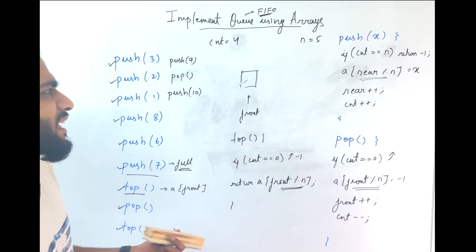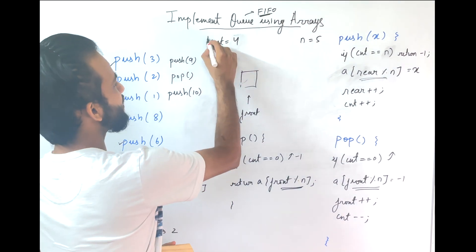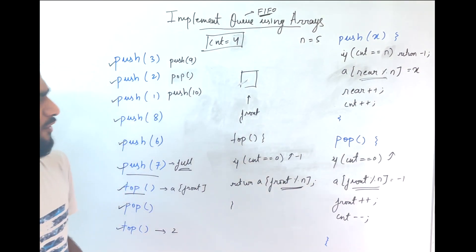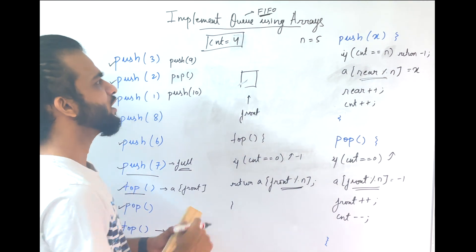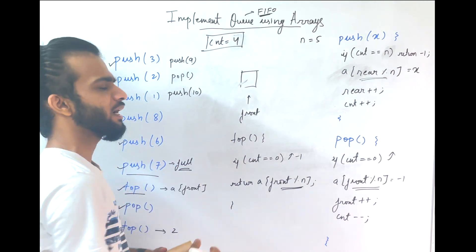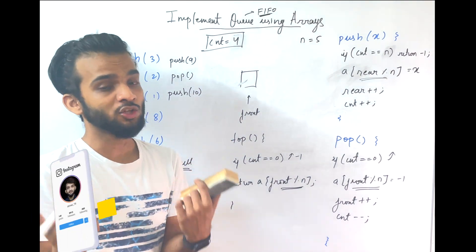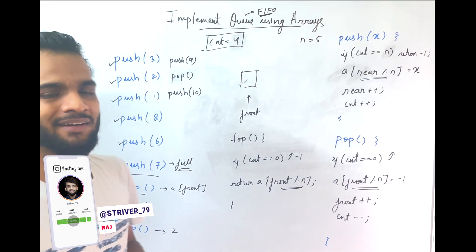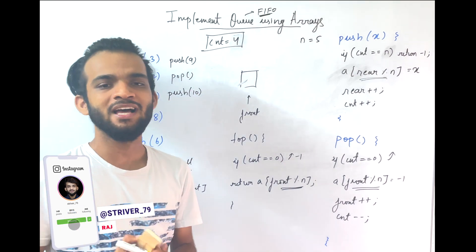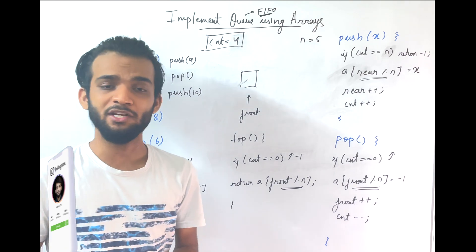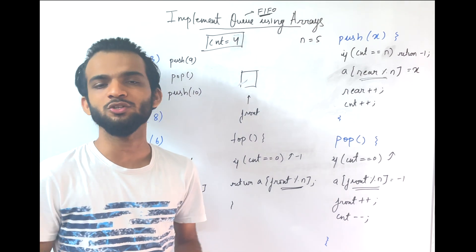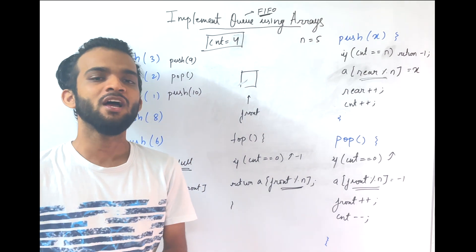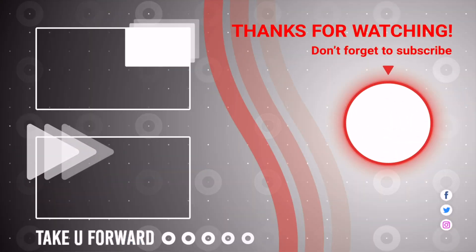The size of the queue can be obtained using the count variable, and you can check if the queue is empty using count as well. That is how the queue can be implemented using arrays. I hope you understood the entire explanation. If you did, please like this video, and if you're new to the channel, do consider subscribing. Goodbye, take care.